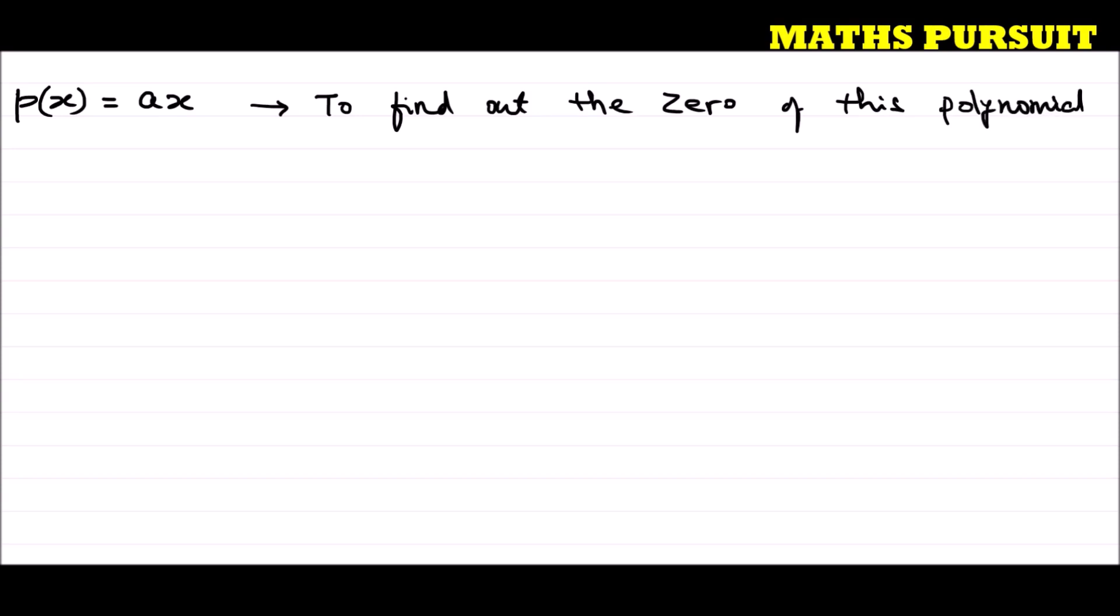And question has further also told us here that this value of a is not equal to zero. Now guys what does it mean by the zero of this polynomial?